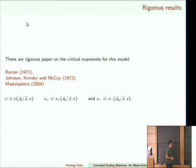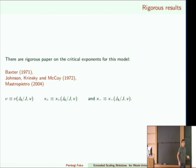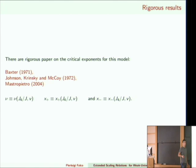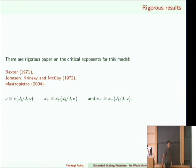The key point is that these critical exponents nu, x plus, and x minus are functions of the coupling J4/J and also of the function v in the interaction. This is actually surprising: typically, because of a conjecture called universality, critical exponents are just numbers — not functions of the specific model. If you slightly change a model, its critical exponent should remain the same. These models violate this, and are called weakly universal because their exponents depend on the specific model.